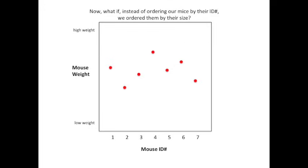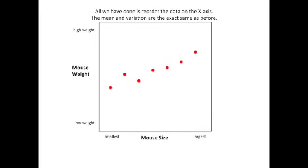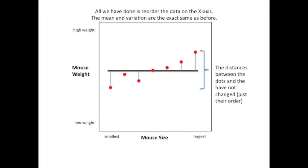The difference between each data point is squared so that the points below the mean don't cancel out the points above the mean. Now, what if instead of ordering our mice by their identification number, we ordered them by their size? Instead of using identification number on the x-axis, we have mouse size with the smallest size on the left side and the largest size on the right side. All we have done is reorder the data on the x-axis. The mean and variation are the exact same as before. Here, we show the mean again as a black bar that spans the graph in the exact same location as it was before. Also, the distances between the dots and the line have not changed, just the order of the dots.